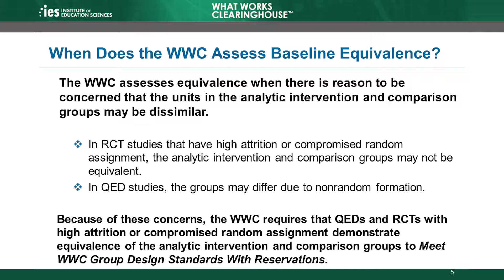Therefore, we make no assumptions about their similarity at baseline. Because of these concerns about the similarity of the groups and the potential for bias if the groups are different, the WWC requires QEDs and RCTs with high attrition or compromised random assignment to demonstrate that the intervention and comparison groups were equivalent on observable characteristics at baseline in order to meet WWC group design standards with reservations. At best, these studies can only demonstrate equivalence on observable characteristics, and we don't know how much the groups may differ on unobservable characteristics. Therefore, these studies cannot receive the WWC's highest rating of meets WWC group design standards without reservations.